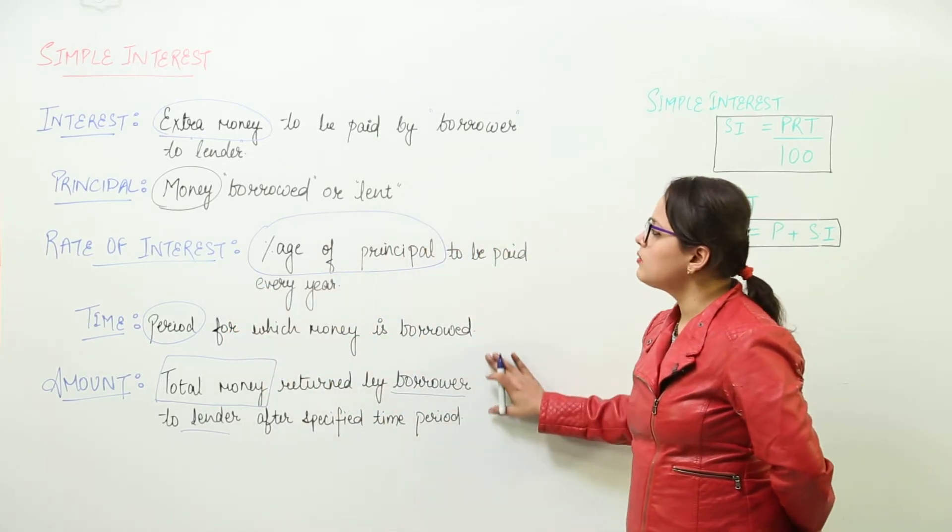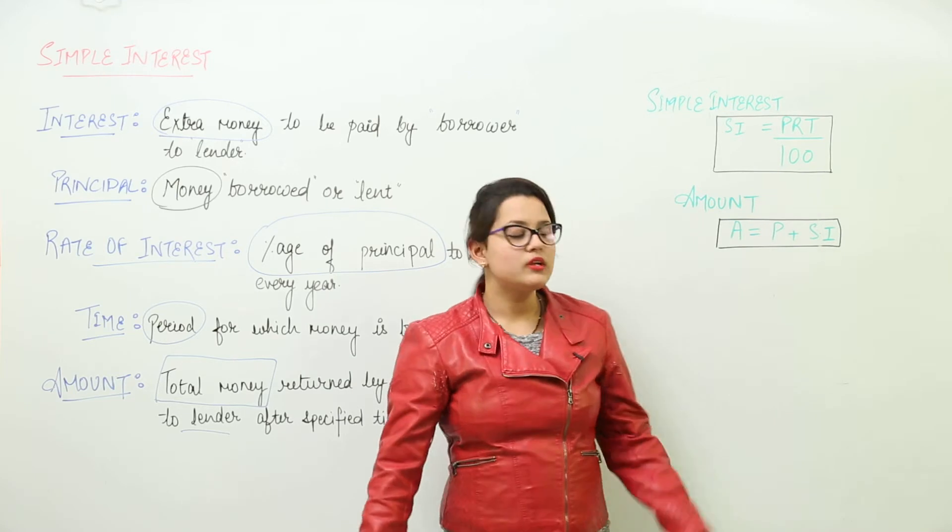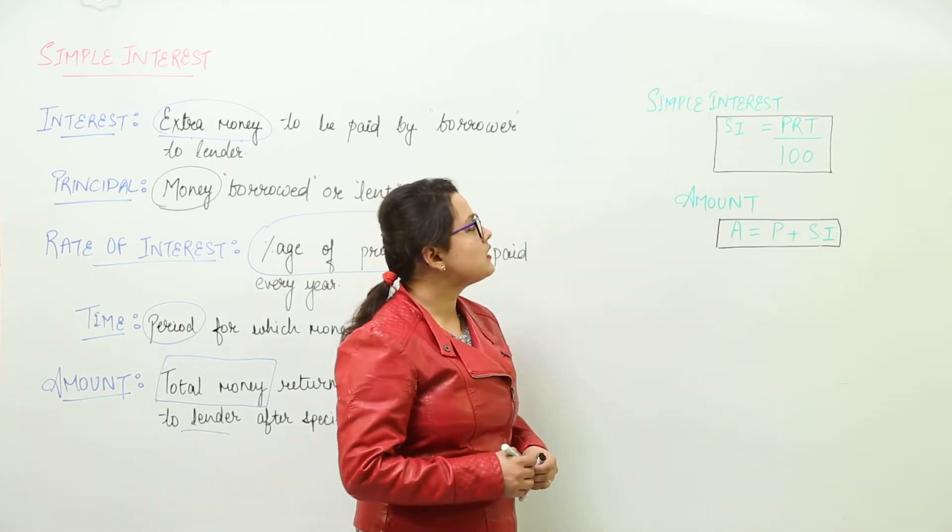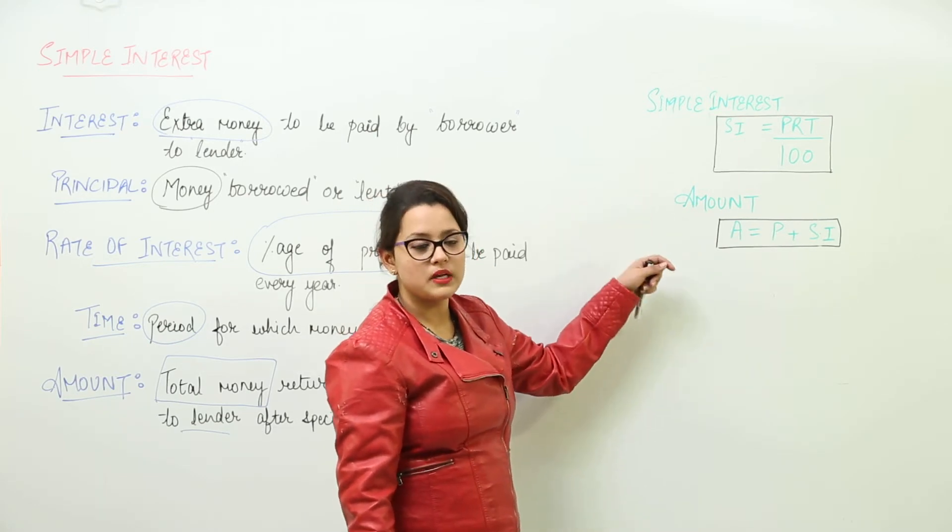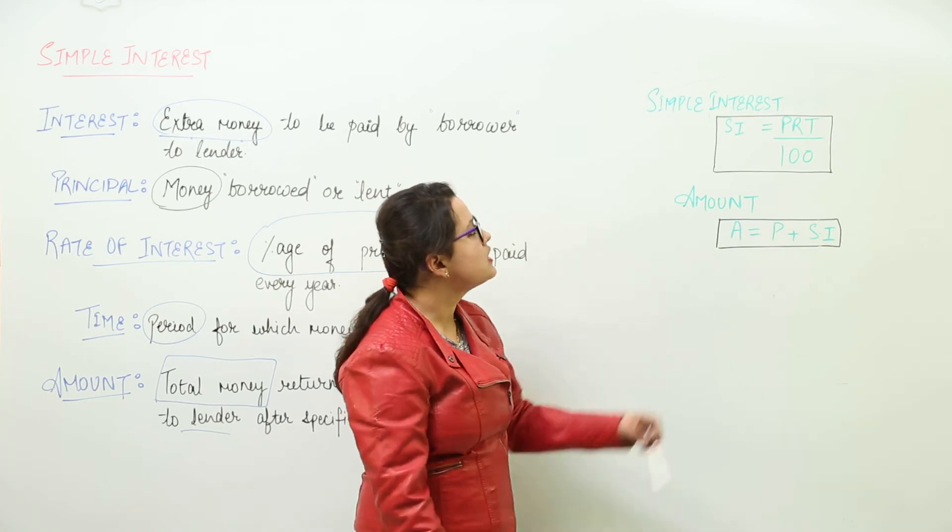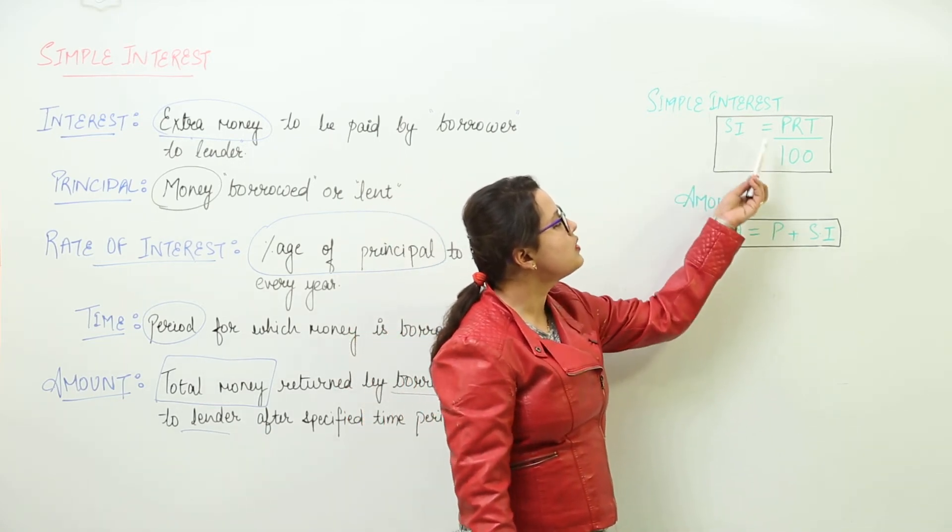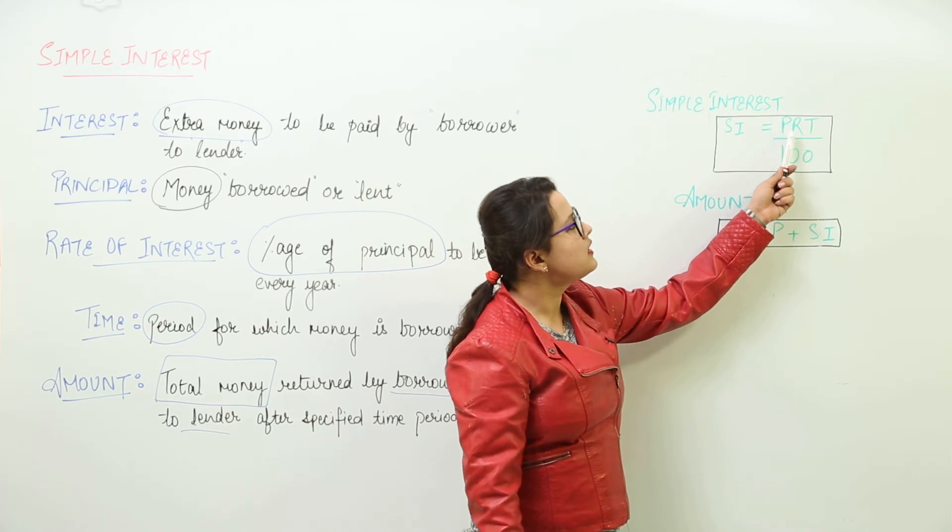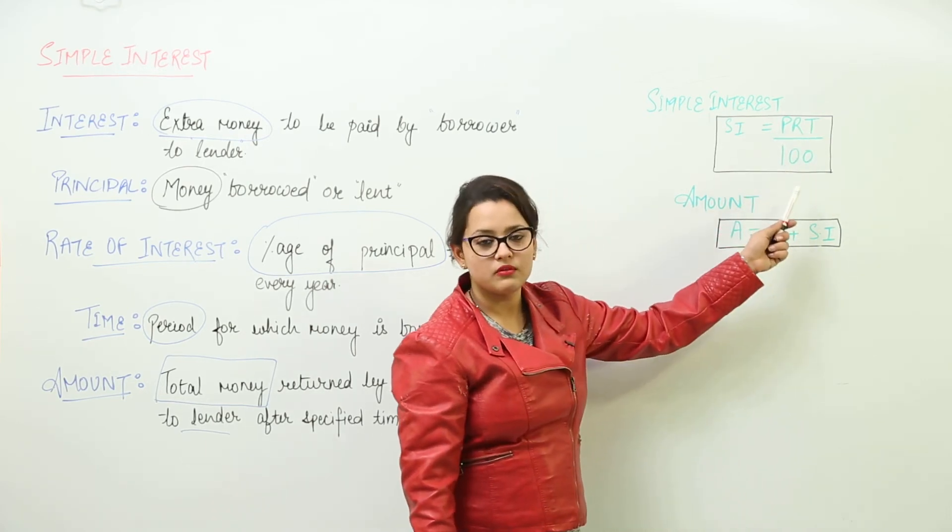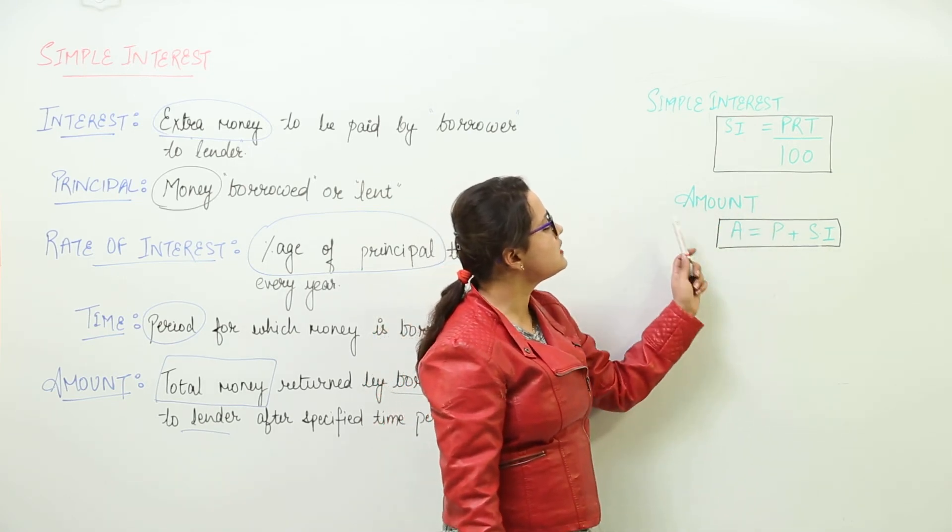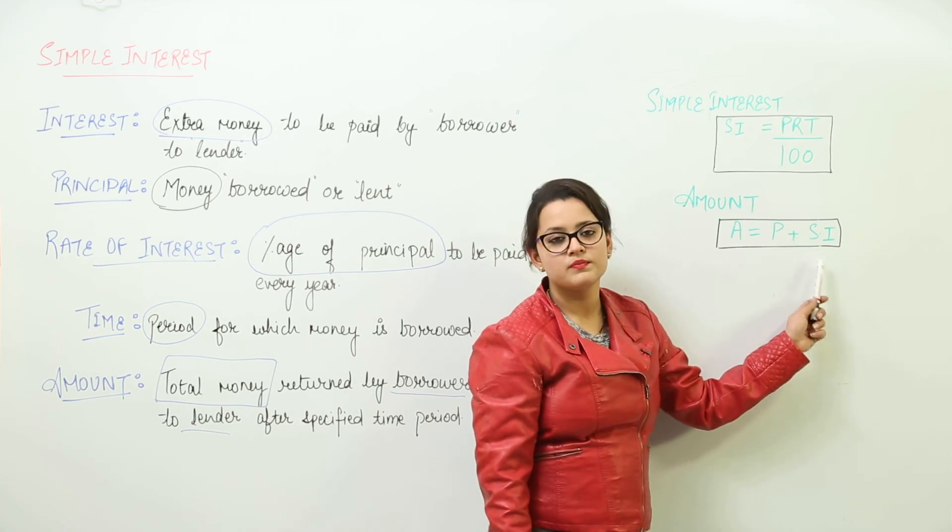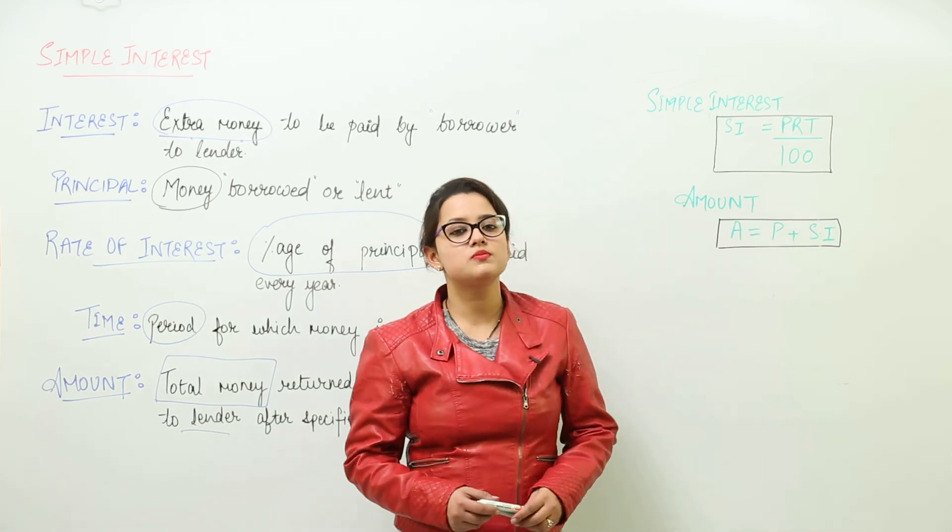Clear? So this was about the simple interest. Now let us move on to the formulas. For calculating simple interest, we have these simple two formulas. That is, one is for the simple interest, other one is for the amount. The simple interest is equal to PRT, the product of principal, rate of interest, and time period, whole divided by 100. And the amount is equal to the principal plus the simple interest calculated. So we will be solving some questions based on these now.